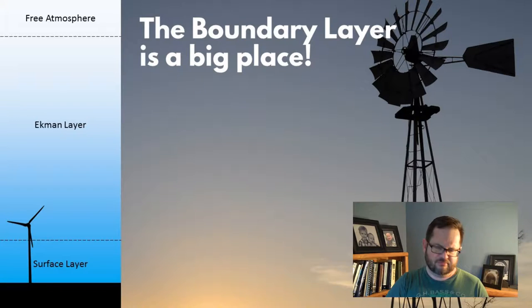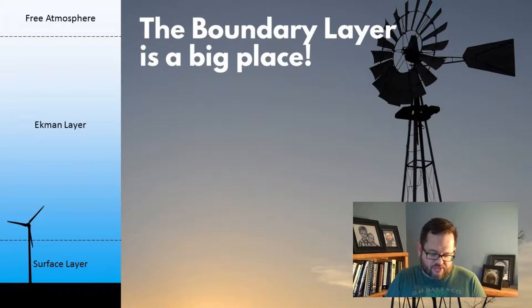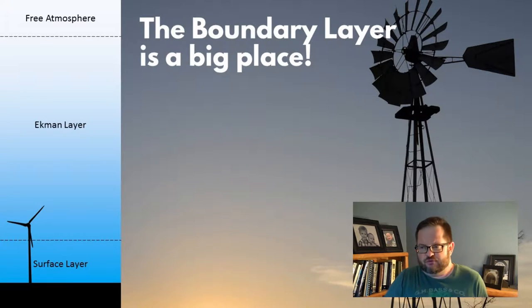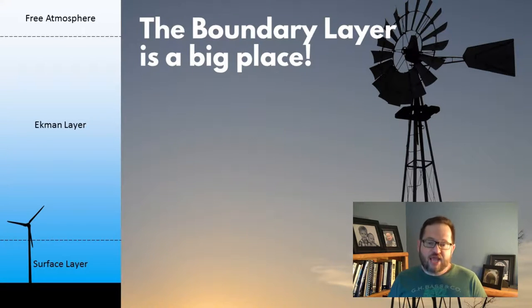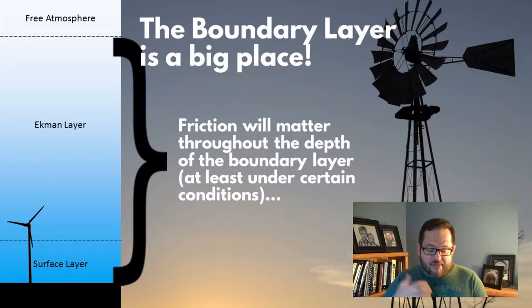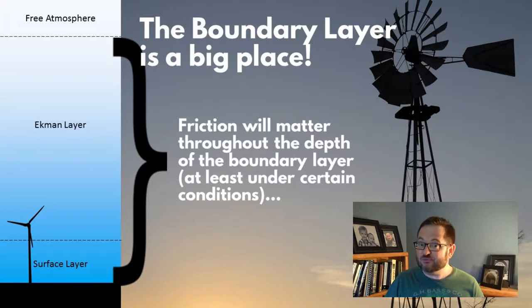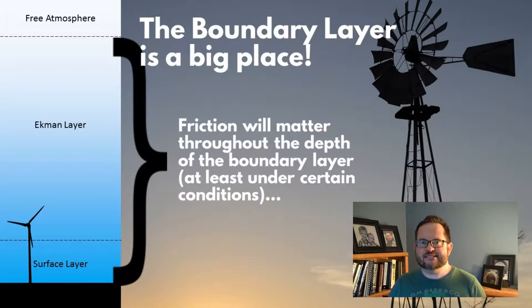There are pros and cons to that term, which we'll see in a future module. These are the places where wind power is generated — either in the surface layer for a relatively low wind turbine, or possibly in the Ekman layer for a relatively tall wind turbine. Friction will be affecting the speed and, as we'll see, the direction of the winds.